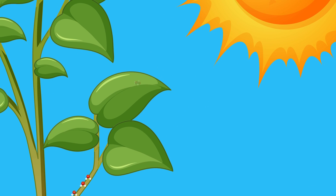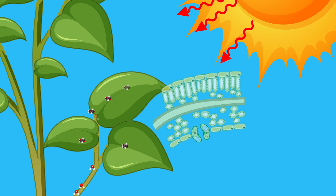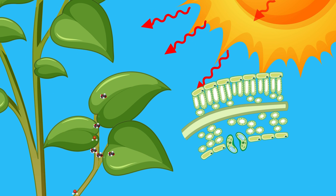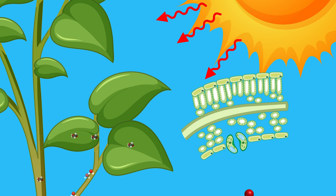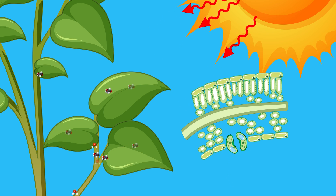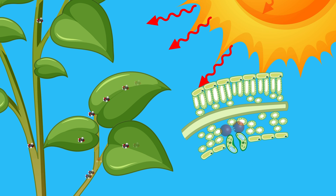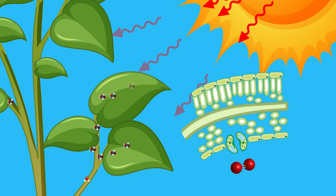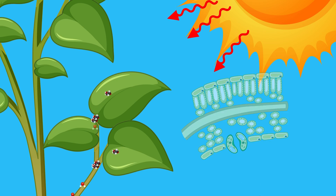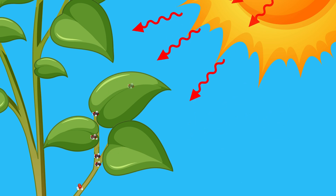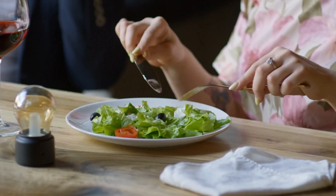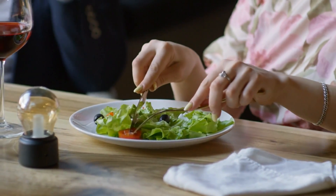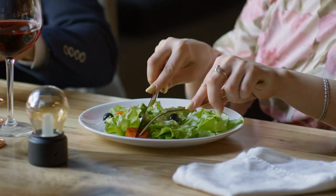Plants use the energy from sunlight during the food-making process of photosynthesis. The food they make is passed to people and animals when they eat the plants.